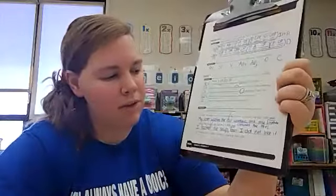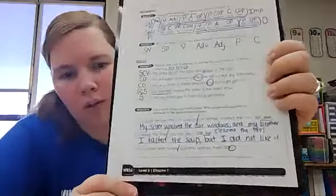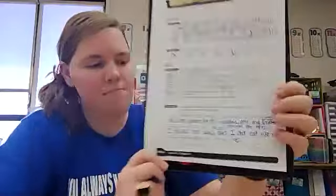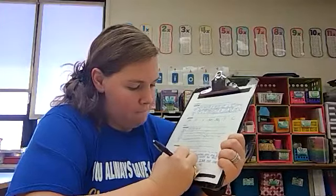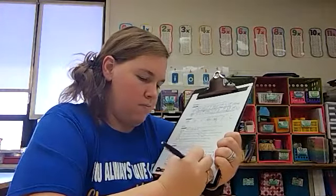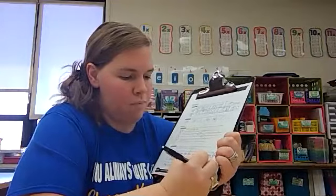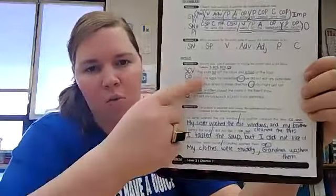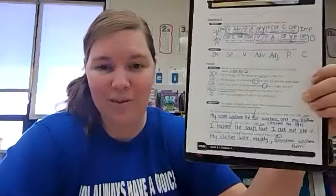For the final compound sentence it says my clothes were muddy, grandma washed them. We're going to divide between muddy and grandma. This time we're not adding any new words, we're using what's called a semicolon. My clothes were muddy, semicolon, grandma washed them. And again put a period at the end of your sentence. Next week you are going to practice more with the types of sentences and you're going to practice writing some new sentences too. Great job today.